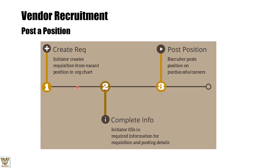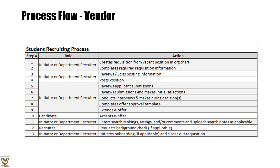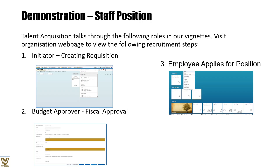For vendor recruitment: we create a requisition with complete information and simply post the position. It is important to differentiate between line employee recruitment, staff employee recruitment, and vendor recruitment. The process includes selecting the finalist, offer approval, extending e-offers, acceptance of e-offers, and closing the search — a straightforward process flow for vendors.